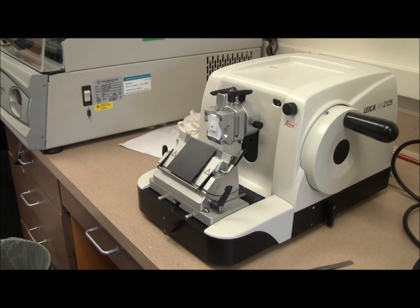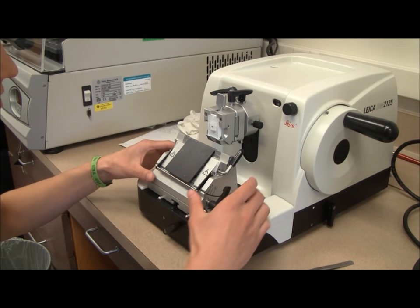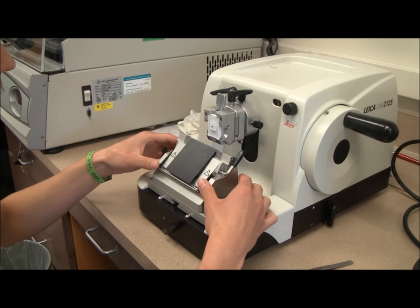The knife holder can be adjusted in three planes with the use of three different knobs. The front knob is used to move it forward and backward. The knob on the left is used for lateral adjustments and the one on the right changes the angle of the knife holder.